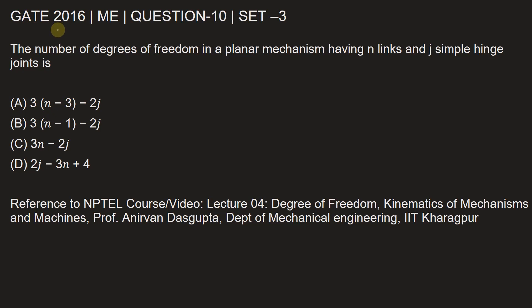This question is from GATE 2016 Mechanical Engineering paper, Set 3, Question Number 10. The number of degrees of freedom in a planar mechanism having n links and j simple hinge joints is... Let's see, in a planar mechanism: